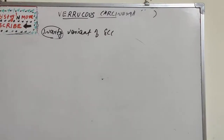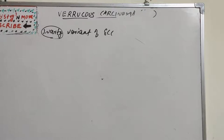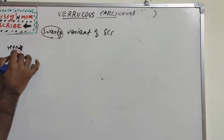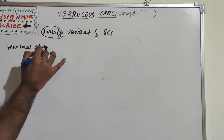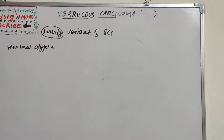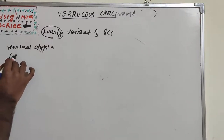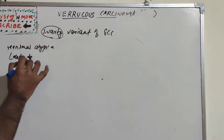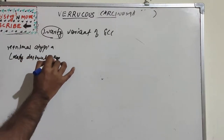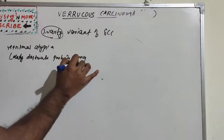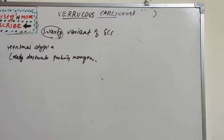Verrucous carcinoma is a predominantly exophytic overgrowth of well-differentiated keratinized epithelium with minimal atypia, and with locally destructive pushing margins at its interface with the connective tissue.